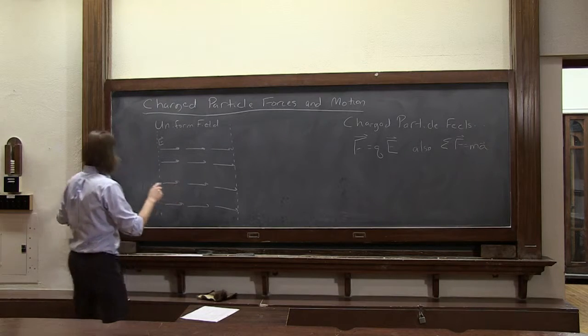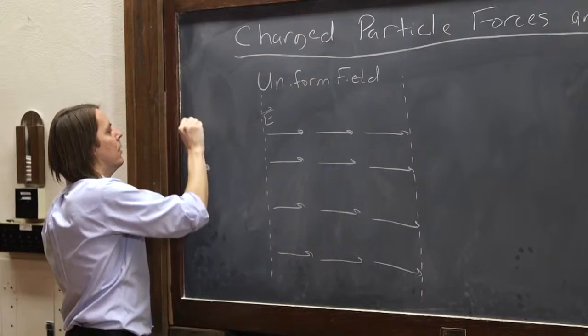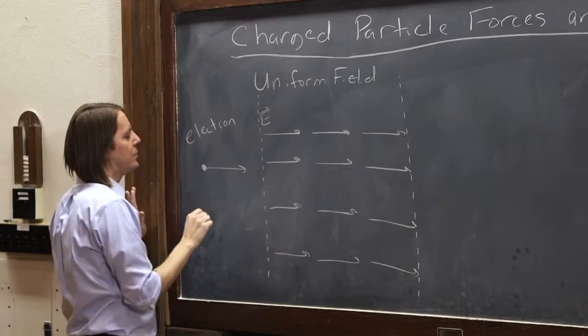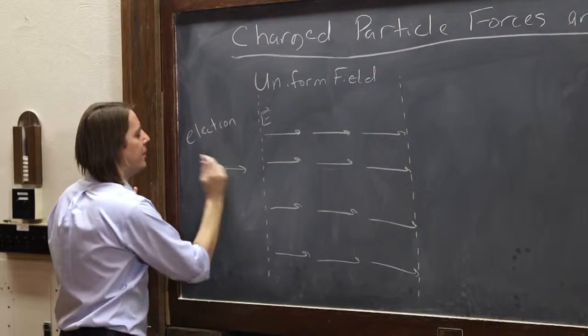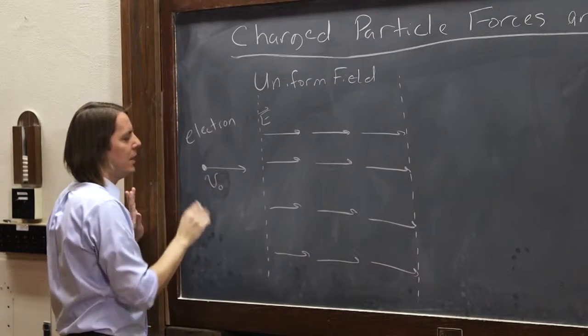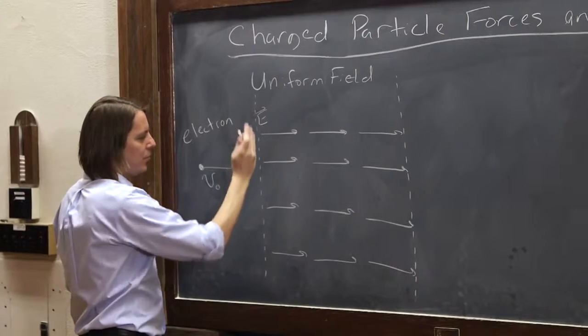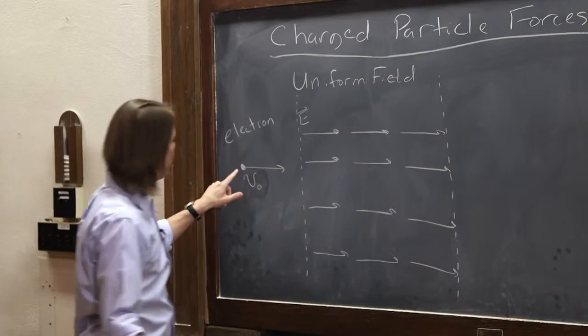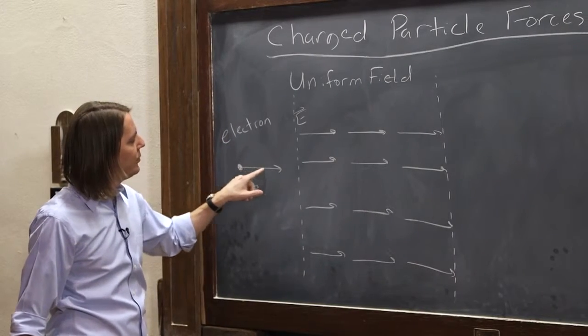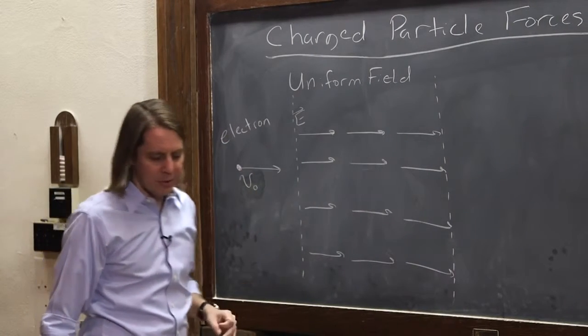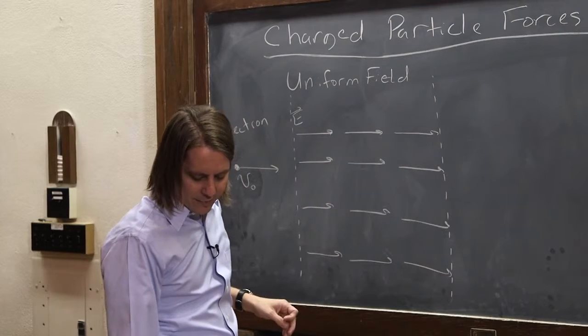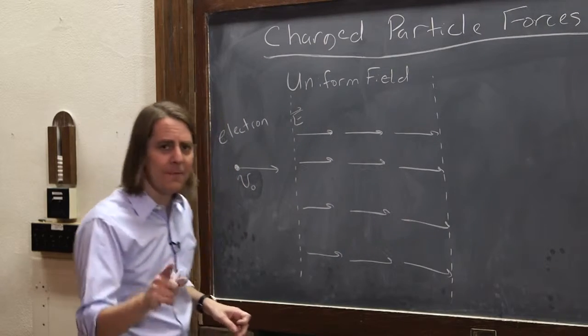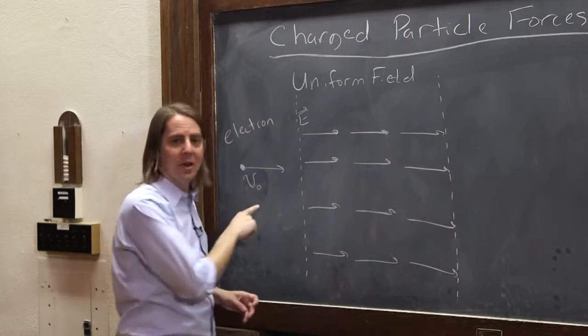Let's say we have an electron here. And it is moving with initial velocity v-naught towards a region of a uniform field. Out here it has no uniform field. It's field-free, it's just coasting along, and then it's going to enter a region of a uniform field that looks just like that. So the question we could ask is how far in is this electron going to go before it gets bounced out?